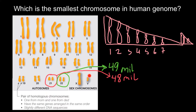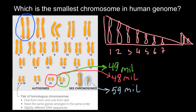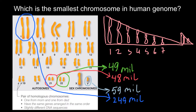So once again, the first chromosomes that were sequenced were chromosome 22 and then chromosome 21, and it turned out that chromosome 22 is not the smallest — chromosome 21 is the smallest. As for the Y chromosome, it is made up of 59 million bases. Chromosome number one, the biggest, is made of 249 million bases.